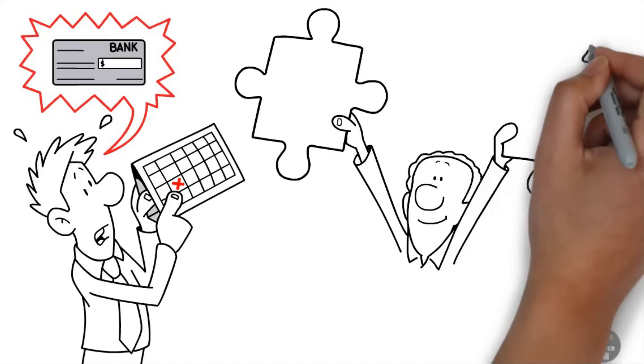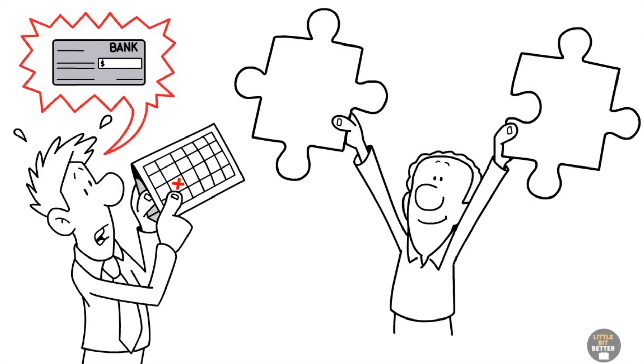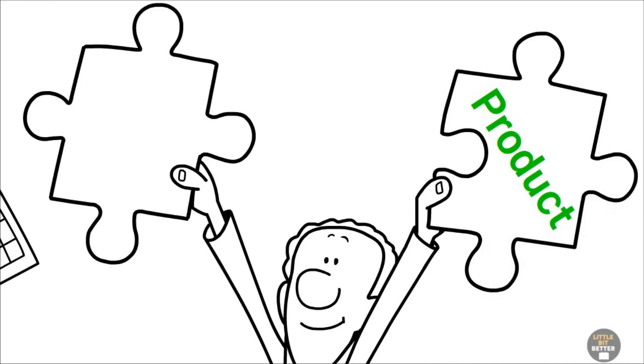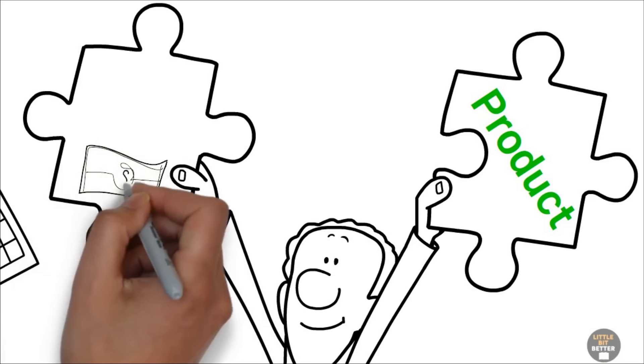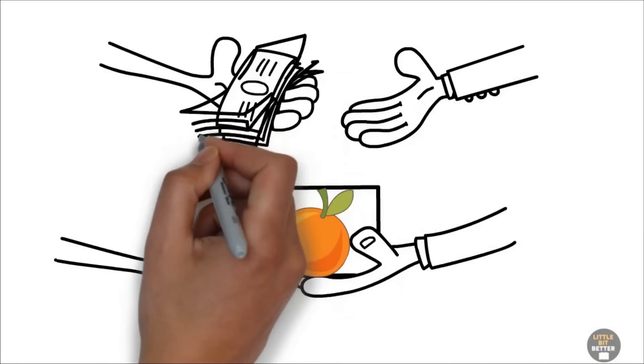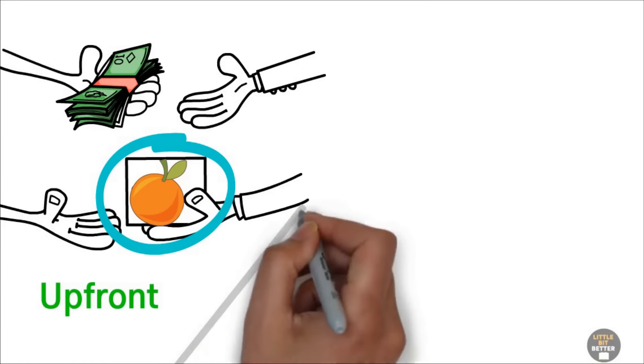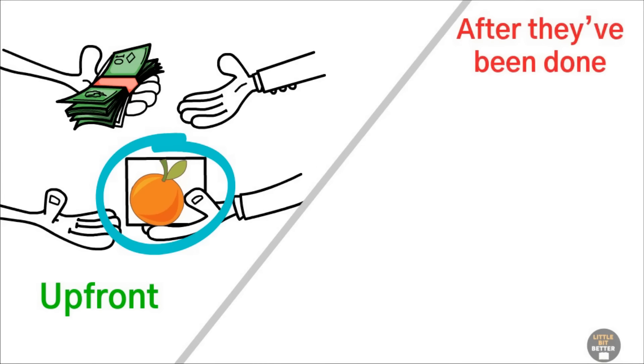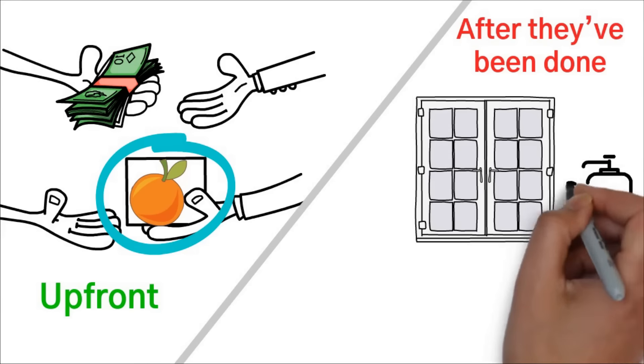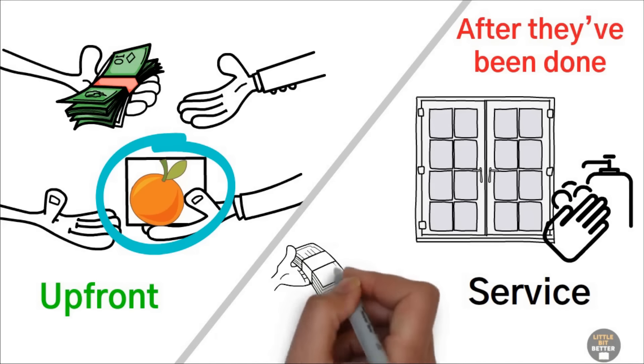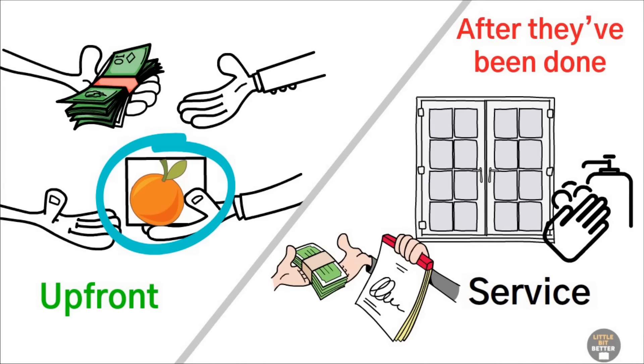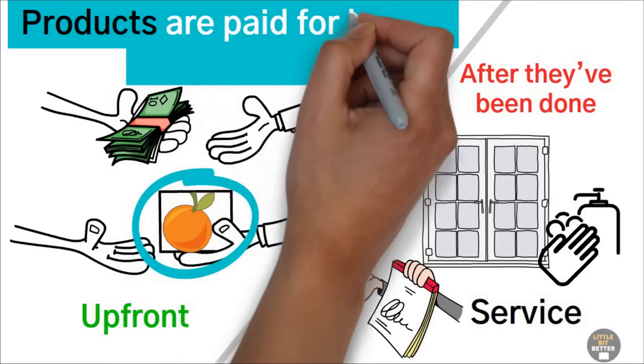When you have a product, people expect to pay for it in advance. When you go to a store to buy an orange, don't you have to pay for it before you eat it? We're used to paying for products up front and services after they've been done. The last time you had your windows cleaned, the service was performed first and then you paid your bill, right? Products are paid for before you use them.